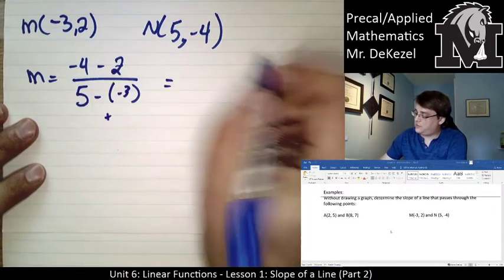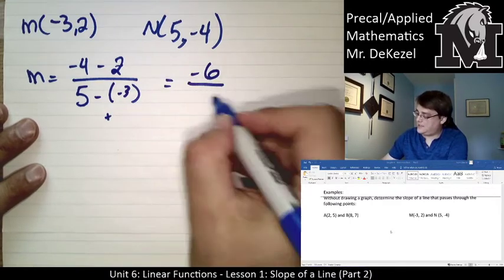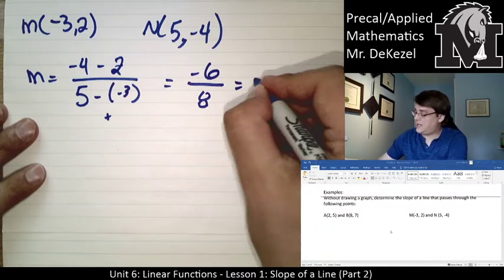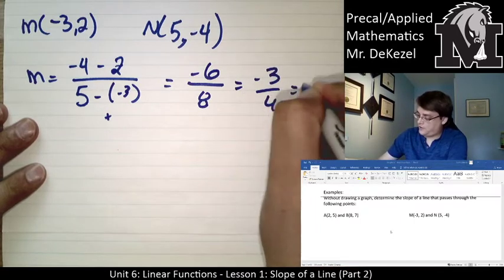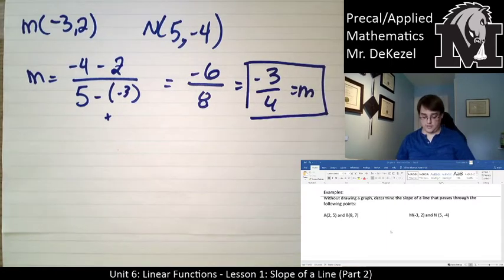So, we have -4, minus 2, that's -6. 5 plus 3 is 8, and then we can reduce this. So, this would be -3/4 for our slope. We put a box around our answer.